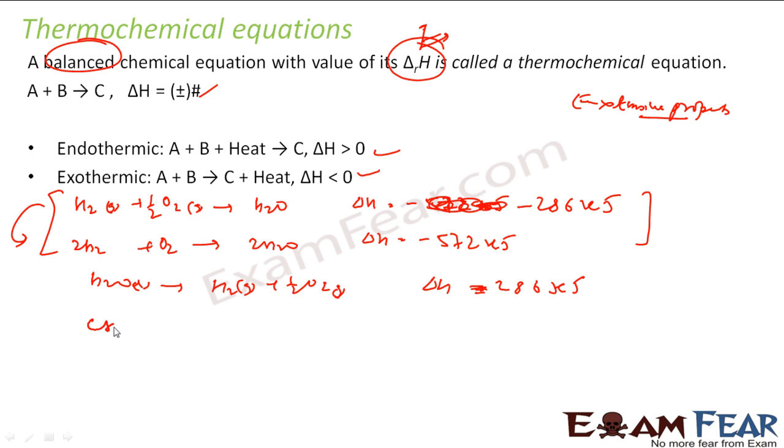We can take more reactions. For example, methane in gas form burns to give carbon dioxide plus water in liquid form. You balance it, and delta H will be minus 890 kilojoules. This is a thermochemical reaction because it has a balanced chemical reaction plus the enthalpy of reaction, denoted by delta H subscript R, where R means reaction.